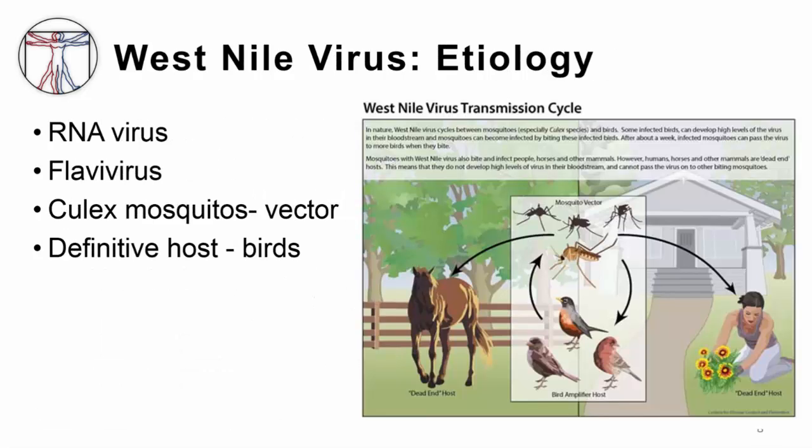West Nile virus is an RNA virus transmitted by mosquitoes, making it an arbovirus. It's part of the flavivirus family. The virus is amplified when mosquitoes bite birds already infected with West Nile, then in turn bite another uninfected bird. Many different birds can host the virus — including crows, ravens, blackbirds, and some types of hawks — so birds are the definitive host. Occasionally, infected mosquitoes bite horses or people. Because people and horses have much lower levels of viremia than birds, there is no continued person-to-person transmission via mosquito. Thus, people are considered dead-end hosts for the virus.